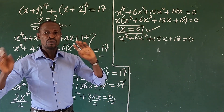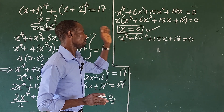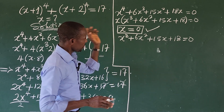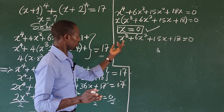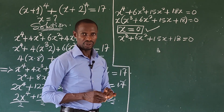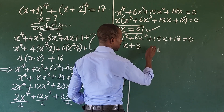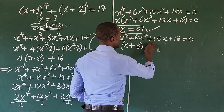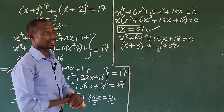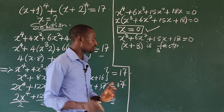Now we solve x to the power of three plus 6x squared plus 15x plus 18 equal to 0. We use the trial and error method to get the first root. Plugging in values 1, -1, 2, -2 does not satisfy the equation, but if we plug in minus 3 it gives us 0. So x plus 3 is a factor. We use the long division method to get the quadratic equation that will lead us to the other two roots.